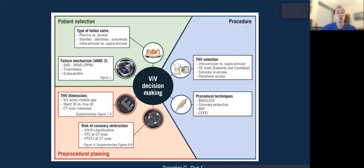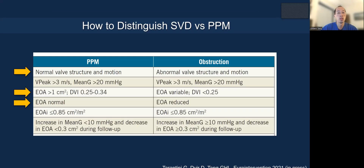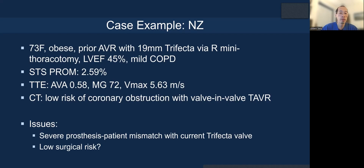Patient selection, procedural planning, and the procedure are highly important in determining the feasibility and technique associated with TAVR in SAVR. How do we distinguish structural valve deterioration versus prosthesis patient mismatch in terms of whether TAVR in SAVR will be beneficial? With PPM, on TEE the valve is actually structurally normal. The EOA can also be normal, and the EOA will be greater than one centimeter with a DVI of 0.25 to 0.34.